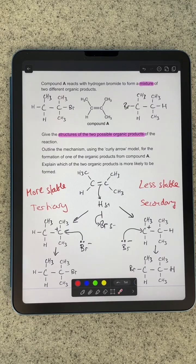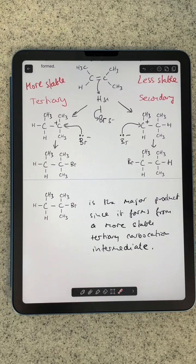So all I need to do now is turn that into an answer that's going to get me all the marks. So that's what I would write there, I draw the structure of the product and say that is the major product because it forms from a more stable tertiary carbocation intermediate.